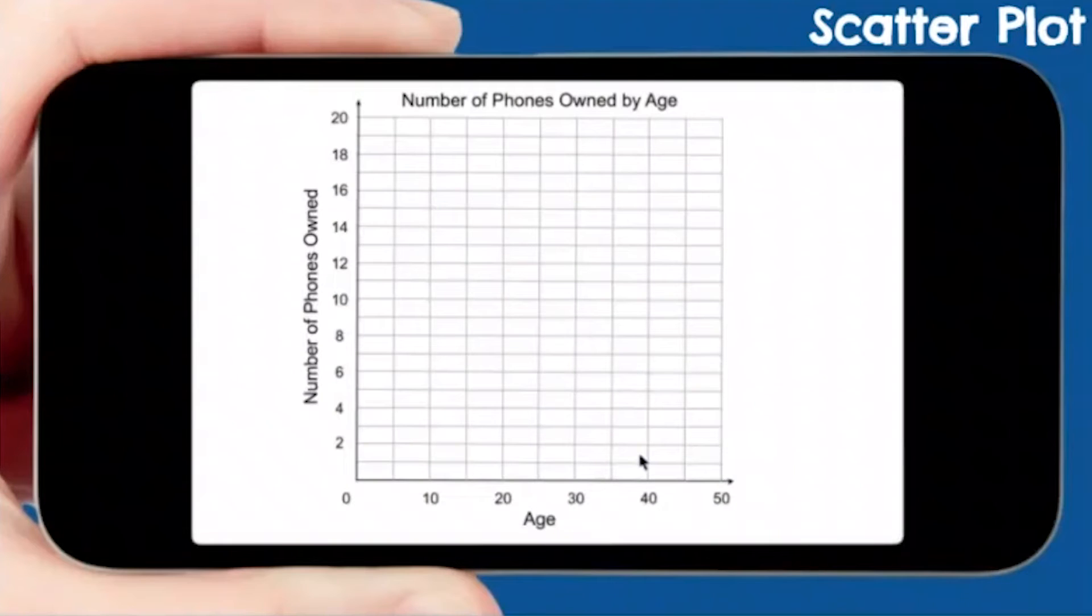Let's practice making our own. I want you to draw this graph on your piece of paper. You're going to have your x-axis and your y-axis. We're talking about the number of phones owned by age. The x-axis represents age. I skipped every other one. So 5, 10, 15, 20, 25, 30, 35, 40, 45, 50. If you want to add those numbers, you can.